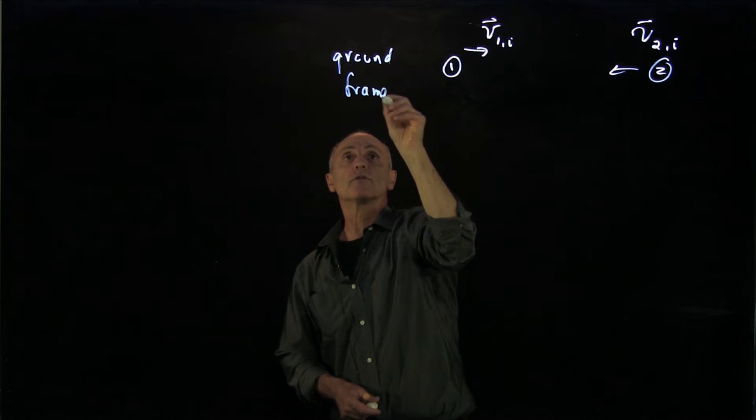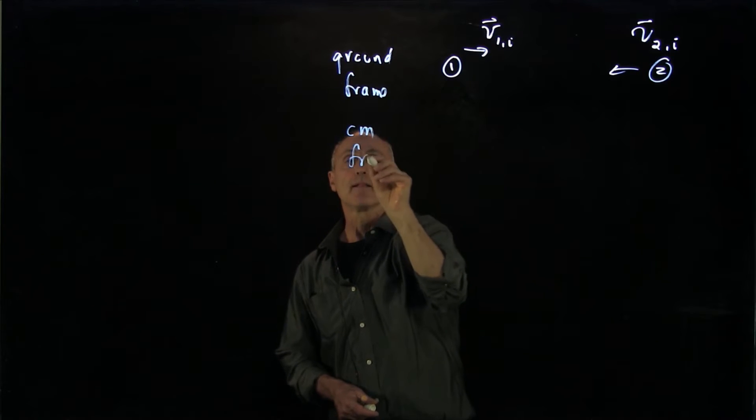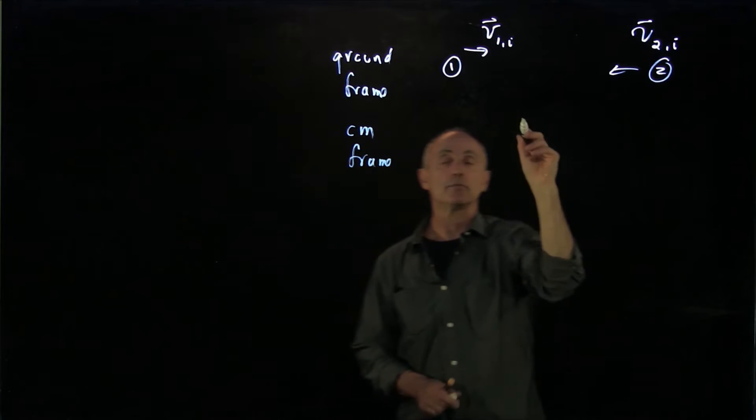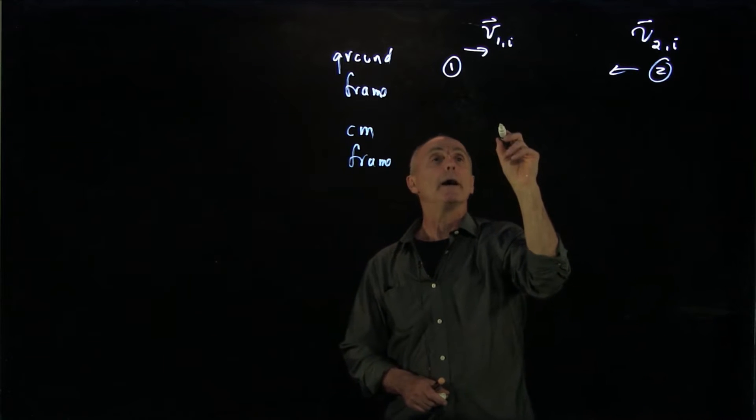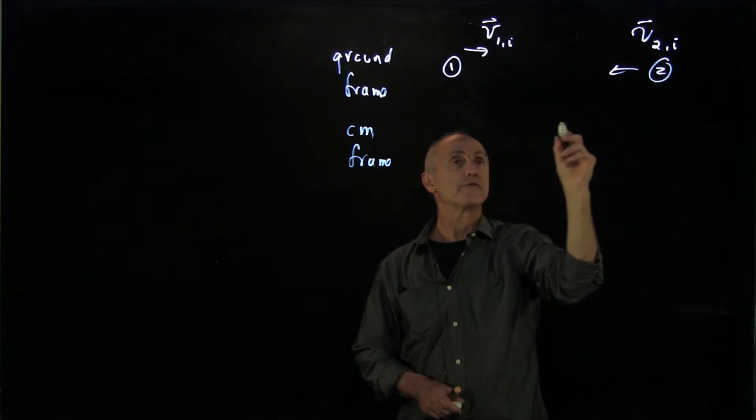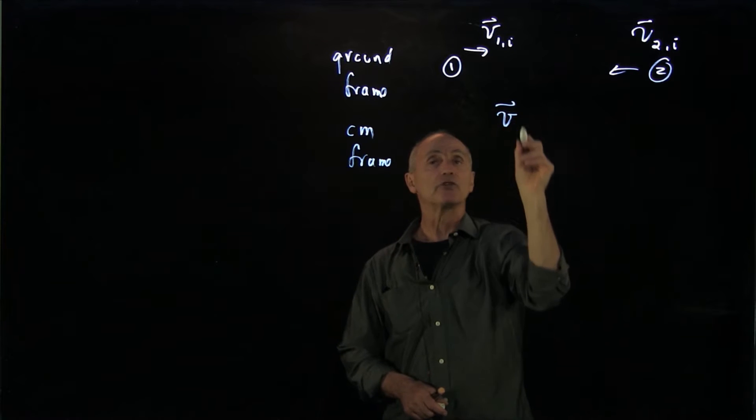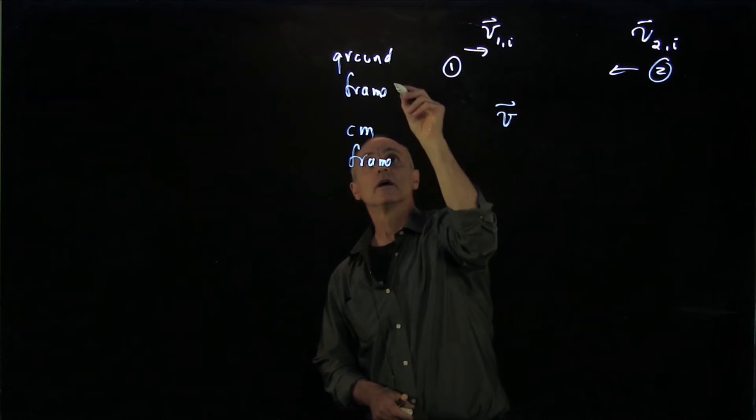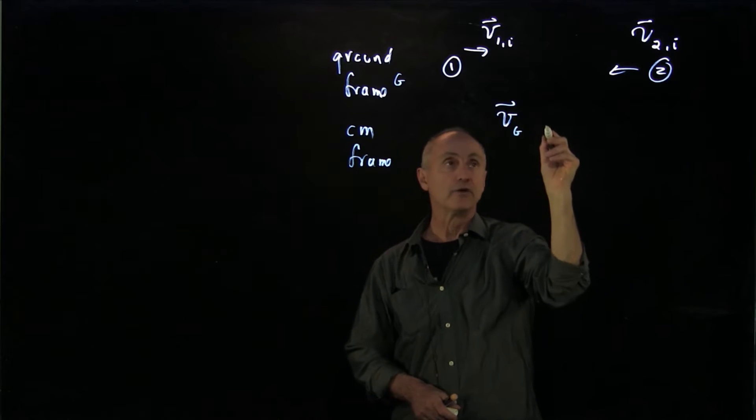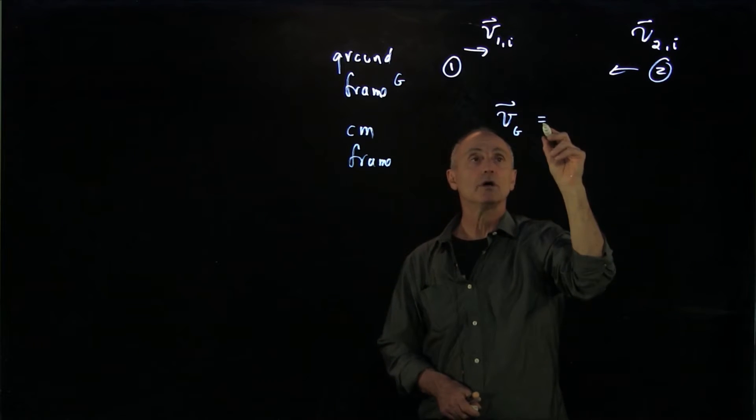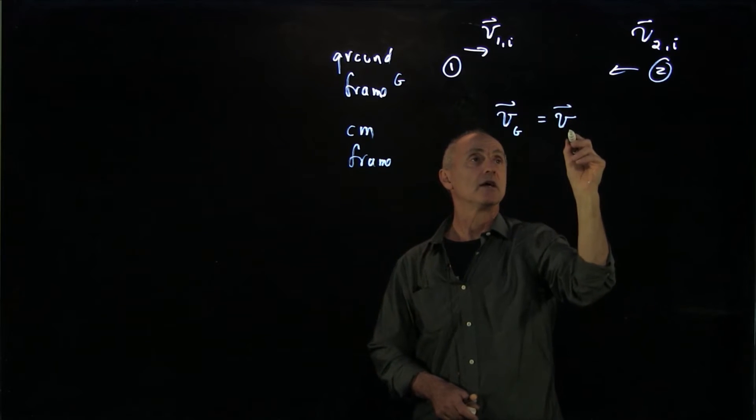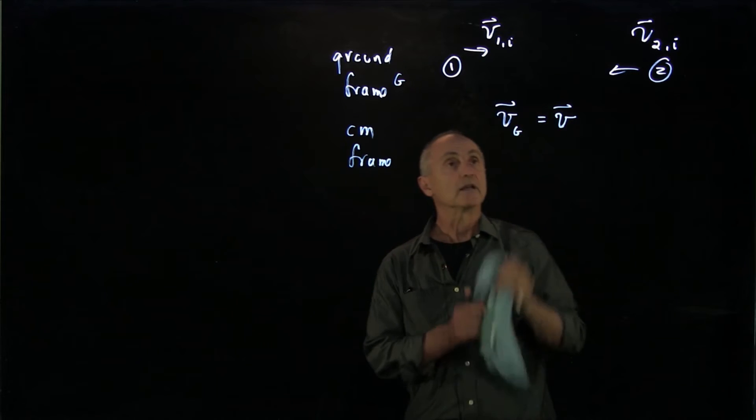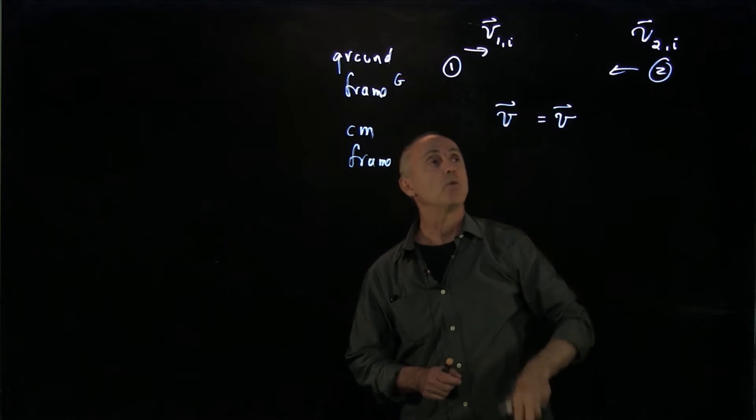And now let's consider the center of mass frame. When we have two different reference frames, the velocity in the ground frame g is equal to the velocity of the object. We'll write it this way, just unprime, v1.